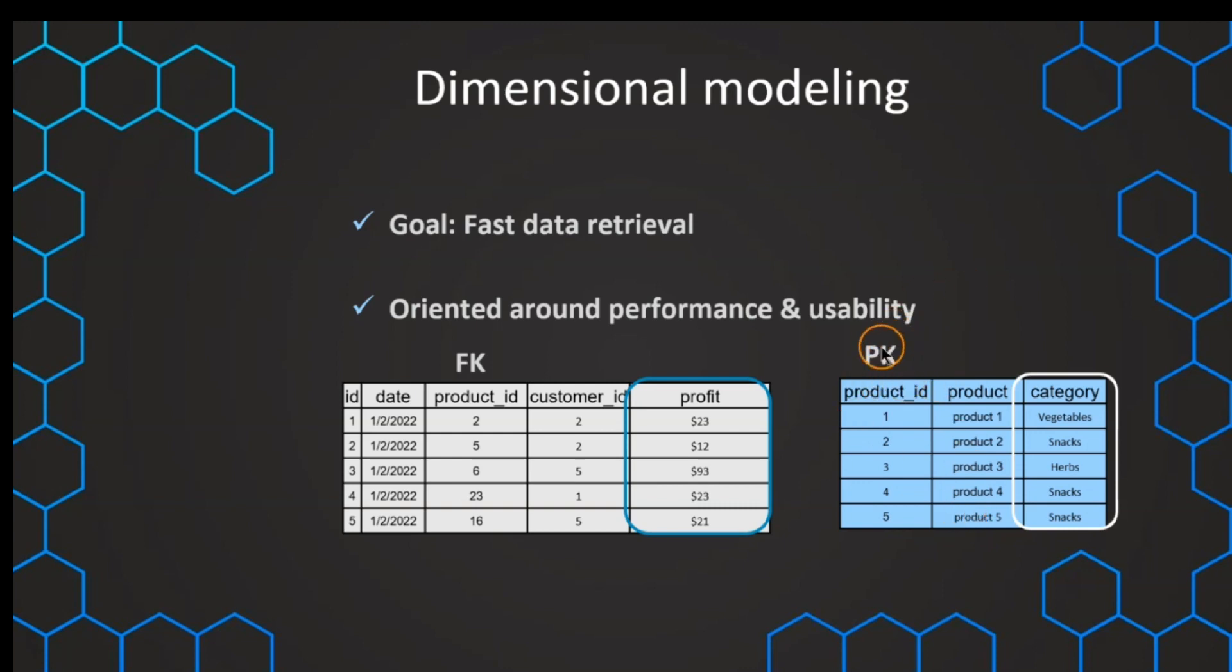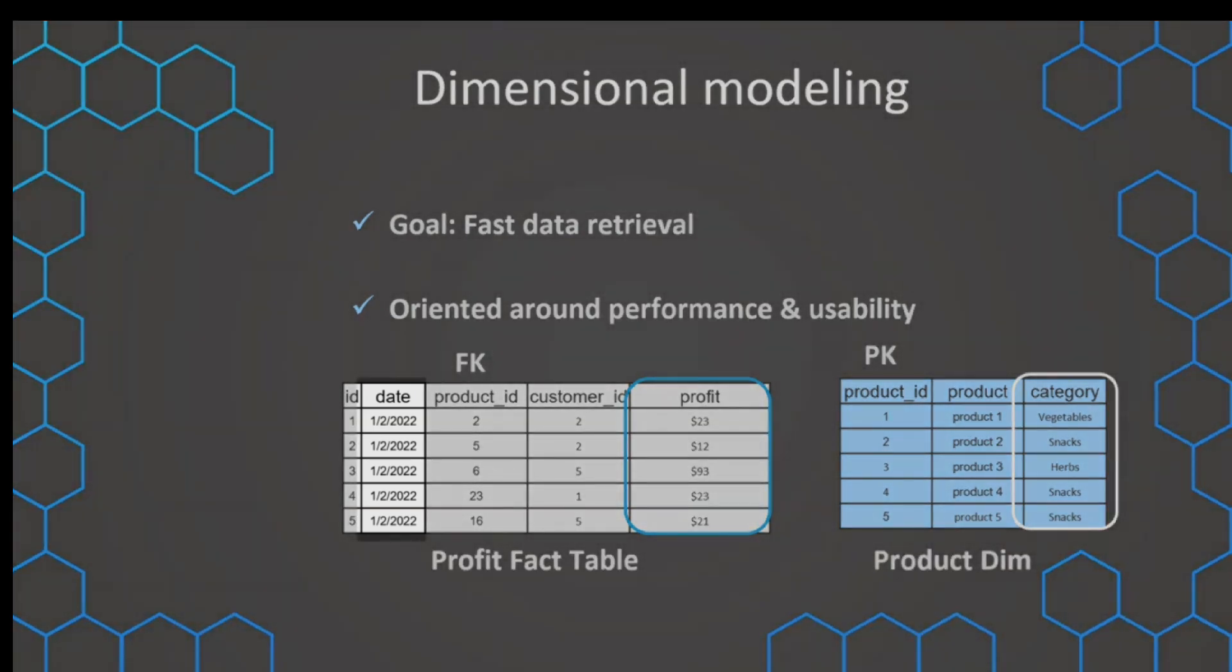And then, of course, we can have the primary key in the dimension table and the related foreign key that is then referring to this primary key of our product table. And now with that we have better performance, but also better usability. Because now the data is structured into logical units, so we have all of the product related information put into a product table. And all of the date information can also be put into a date dimension.